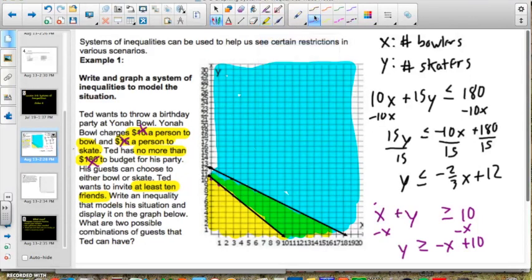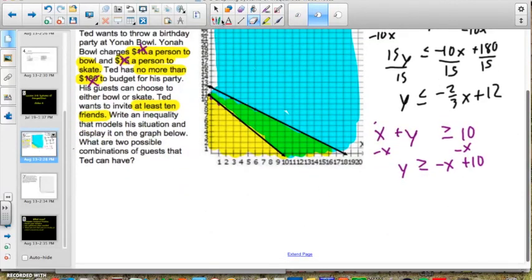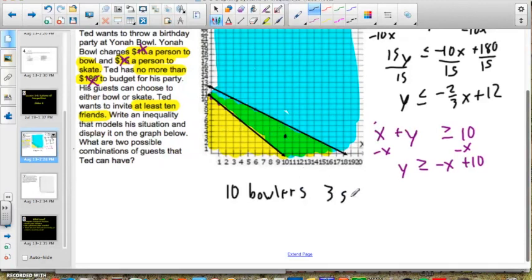So we were asked to give two possible combinations of people that Ted could invite. So I am going to see what two ordered pairs might fall within the green here. So let's just pick this point right here. That's definitely in the green. That has an x value of 10, so that means we would have 10 bowlers. And it has a y value of 3, so it would be 3 skaters. So that's one possible combination. Let's look at this one up here that is in the green. That would be 3 bowlers since our x value is 3, and it would be 9 skaters. Now these are just two possible combinations. Remember anything within the green would actually work.